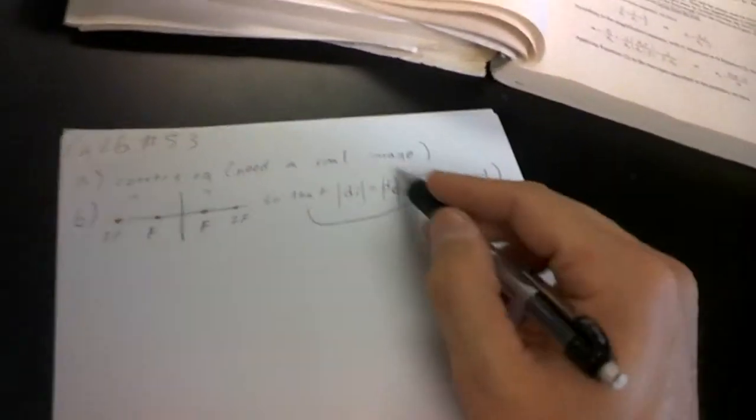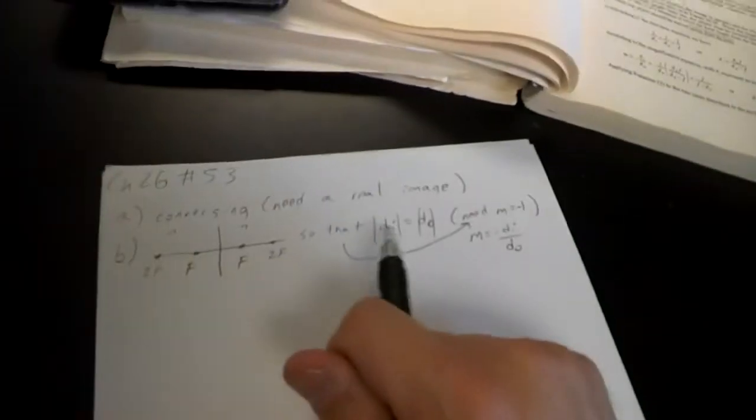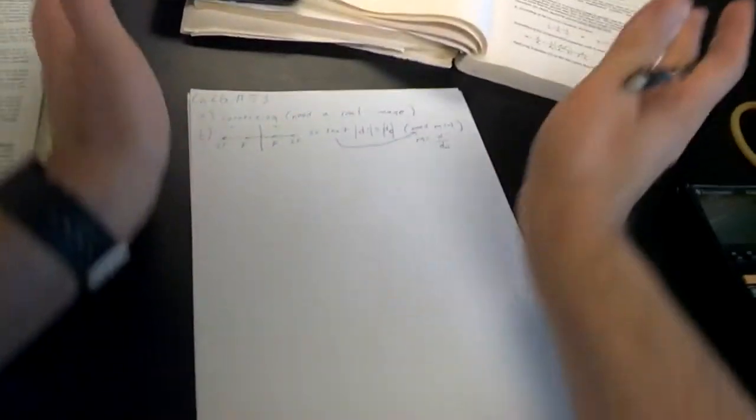We already mentioned we need a real image, so if we need a real image we need a converging lens. Because if we have a diverging lens, light will never come to a point, it'll spread out and diverge and you won't be able to make a copy. So it's got to be a converging lens.